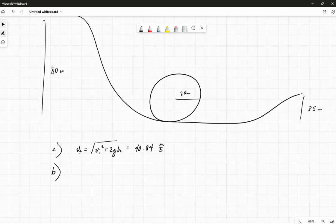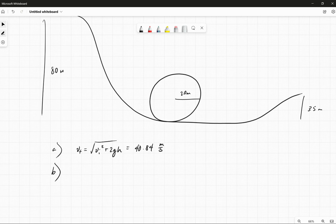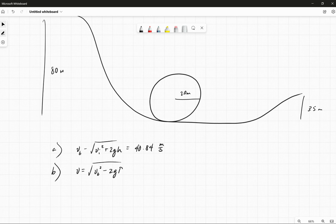Part B asks how fast is it going at the top of the loop? So the speed at the top of the loop is going to be kind of like the speed at the bottom, which we just calculated. We'll call this VB, I suppose, squared minus 2G times the radius of our loop. That's the loss in potential energy. So if we have that number, we square it minus 40 times 9.8, and then we take the square root. This should be 35.72 meters per second.